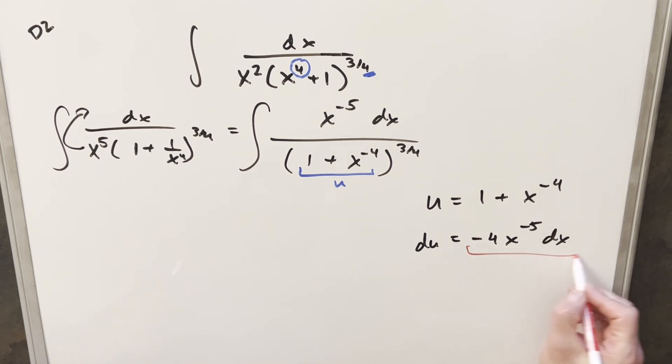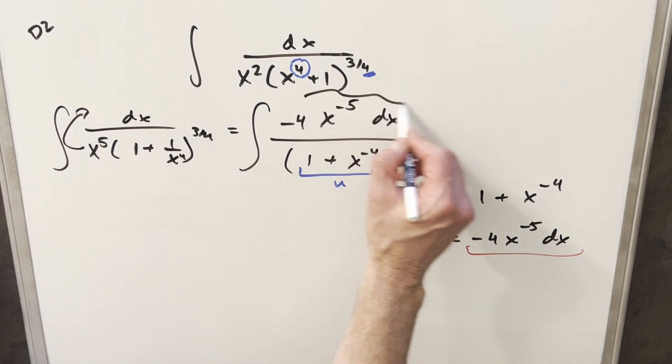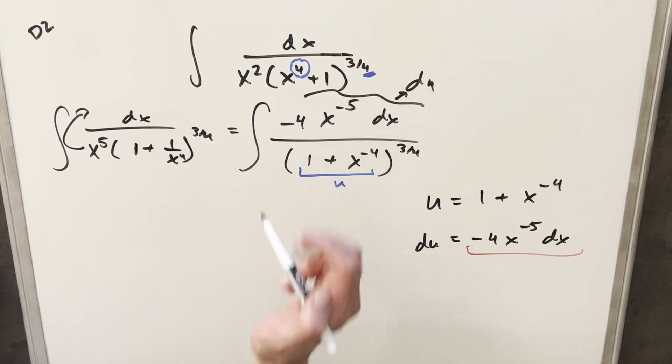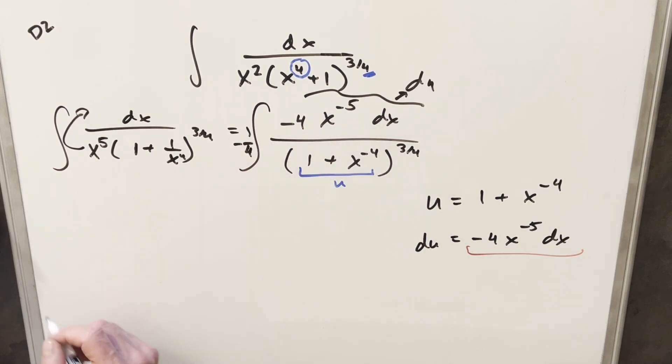But now for this du value, I can kind of just create this in the numerator here. If I just multiply by minus 4, now we matched our, now this is our du. But I don't want to change it, so I'll multiply by minus 1 over 4 up front. So we're just multiplying by 1. And now let's just go ahead with this. So we'll have our minus 1 4th in front. We'll have our du here. This will become u to the 3 4ths.